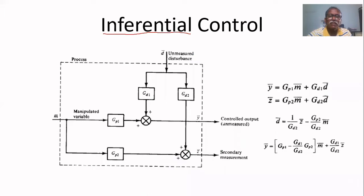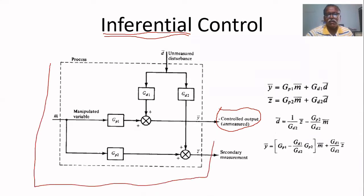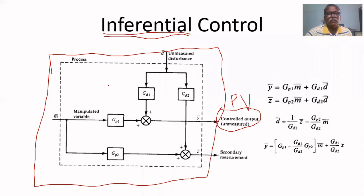Inferential control — the name itself says what is the purpose of this type of controller. Sometimes it is not possible to measure the process variable, that is, the variable to be controlled. The problem with this process is that the controlled output, which is the process variable, is unmeasurable.